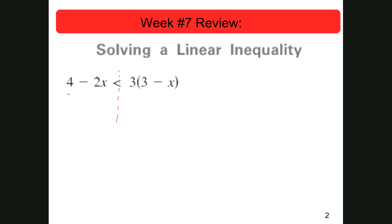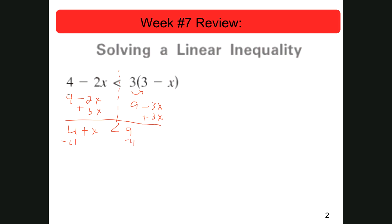I'm going to multiply through here, so that gives me 9 minus 3x. Here I still have 4 minus 2x. I want to get my variables on the same side, so I'm just going to add 3x to both sides. I'm left with 4 plus x is less than 9. I'm going to subtract off 4, so I end up with x is less than 5. If I had to graph it out, this is an open dot at 5, and I'm graphing everything to the left of it.